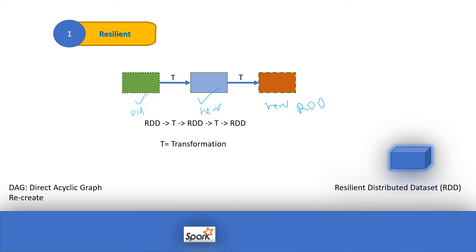The advantage of this is that Spark maintains a DAG — a Directed Acyclic Graph. If a machine or a particular worker node goes down, an RDD can be lost. However, using the lineage stored in the DAG, Spark can recreate that RDD. So even if a worker node goes down, data will not be lost — it will recreate those RDDs. This is one of the biggest advantages: resiliency means we cannot lose data.